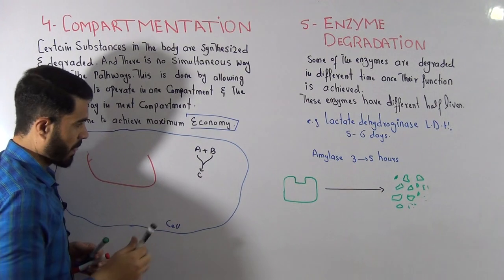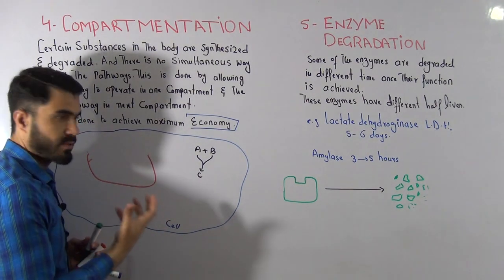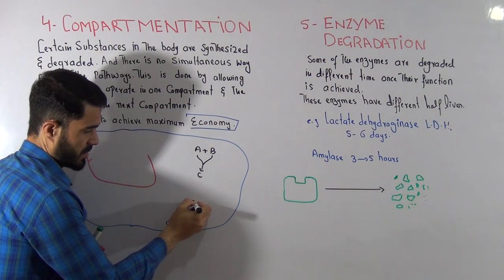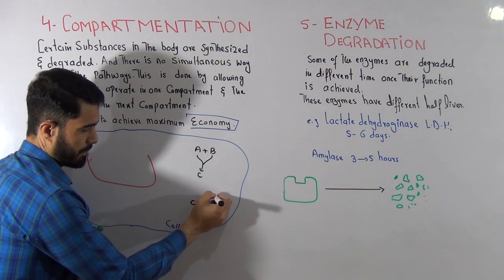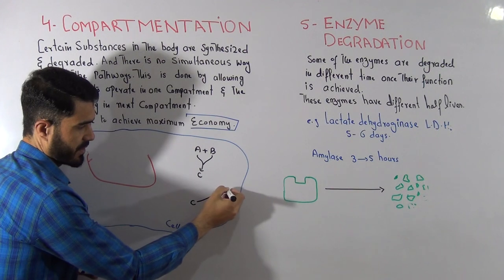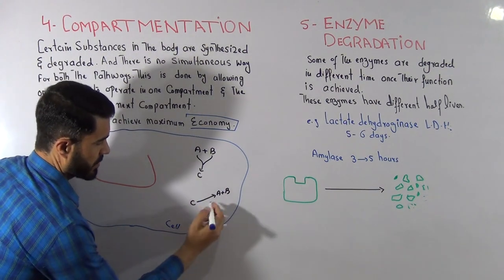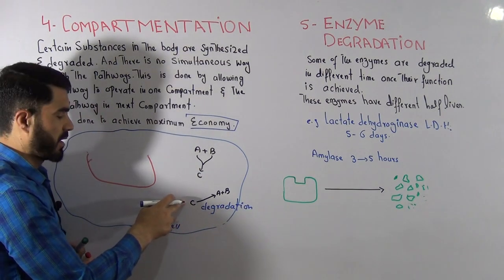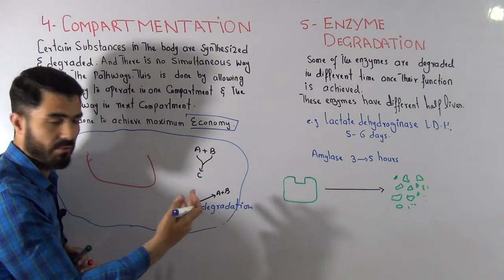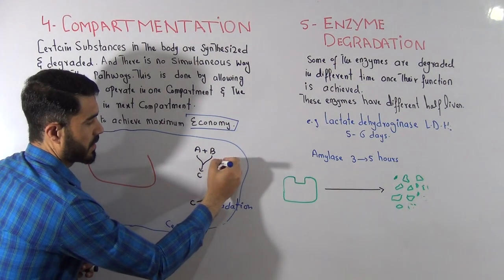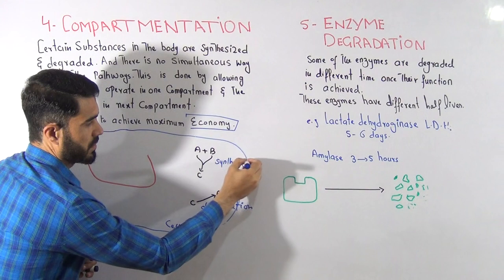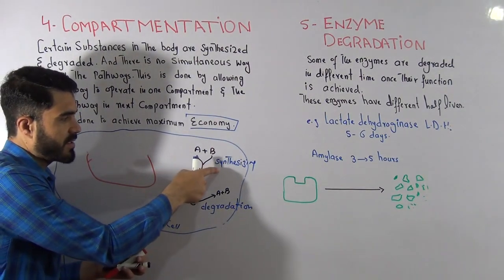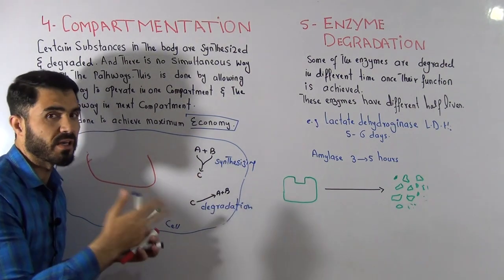Once C's role is finished, we also want C to be converted back into something else — like A plus B. This is called degradation. Degrade means to break down, so C is broken down. So there are two processes inside our cell: synthesizing and degradation, and both are very necessary inside the cell.